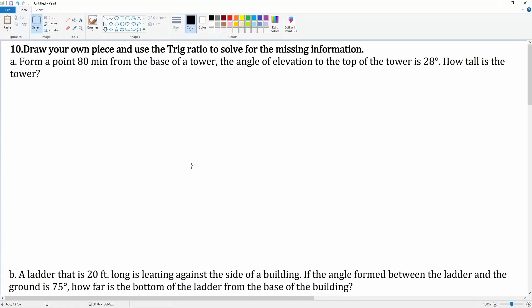Number 10, you're going to draw your own picture and use the trig ratios to solve for the missing information here. So it says from a point 80 miles from the base of the tower, the angle of elevation to the top of the tower is 28 degrees. How tall is the tower?